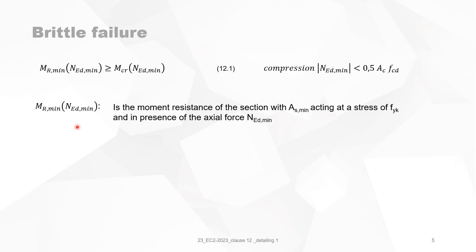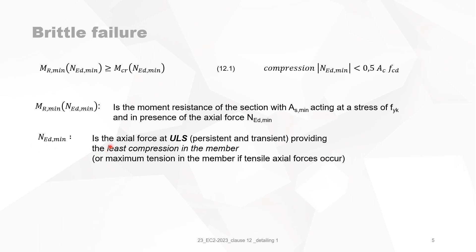MR min as a function of NED min is the moment resistance of the section with AS min acting at the yield stress FAK of the reinforcement and in presence of the actual force. NED min is the actual force at ULS — persistent or transient — providing the least compression in the member, or the maximum tension if tensile actual forces occur. For tensile portions there is no big problem, but for compression the least compression in a member is in most cases zero. So how can you estimate the least compression in the member?